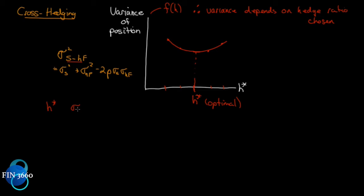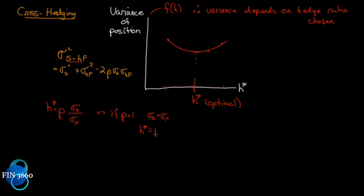We find the optimal hedge ratio by taking the standard deviation of the spot price over the standard deviation of the asset underlying the futures price. Since we're cross-hedging, we multiply it by the correlation between the two. Our optimal hedge ratio will be: rho times (σS / σF). We find the coefficient of correlation and multiply it by the ratio of standard deviations. If our correlation equals one and σS equals σF — meaning we're really talking about the same asset — the optimal hedge ratio works out to one, which is what it should.